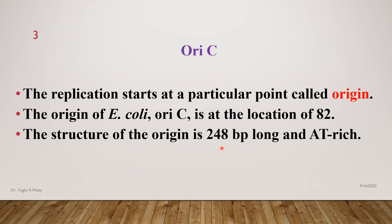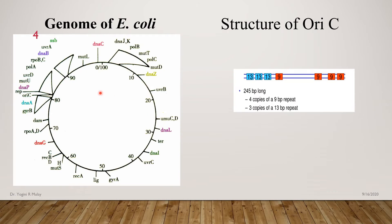The OriC gene is almost 248 base pairs long, and importantly it is at the 80 region. This is the genome organization of E. coli. In order to understand the location of various genes, the entire circle is divided into 100 parts. Accordingly, the position of OriC is at 82. This OriC gene consists of 4 repeats of 9 base pairs and 3 repeats of 13 base pairs.